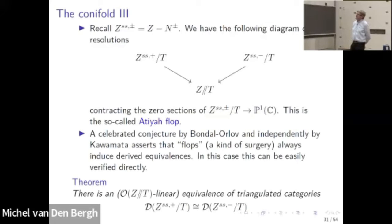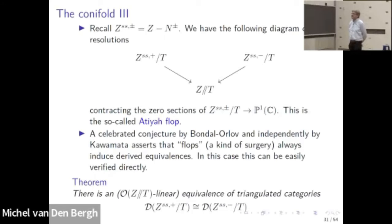The Atiyah flop is a general concept — some kind of algebraic surgery. There is a famous conjecture, made independently by Bondal and Orlov and by Kawamata, which says that flops always induce derived equivalences. This conjecture is wide open, but in this particular example it's an interesting exercise and one can fairly easily verify it directly.